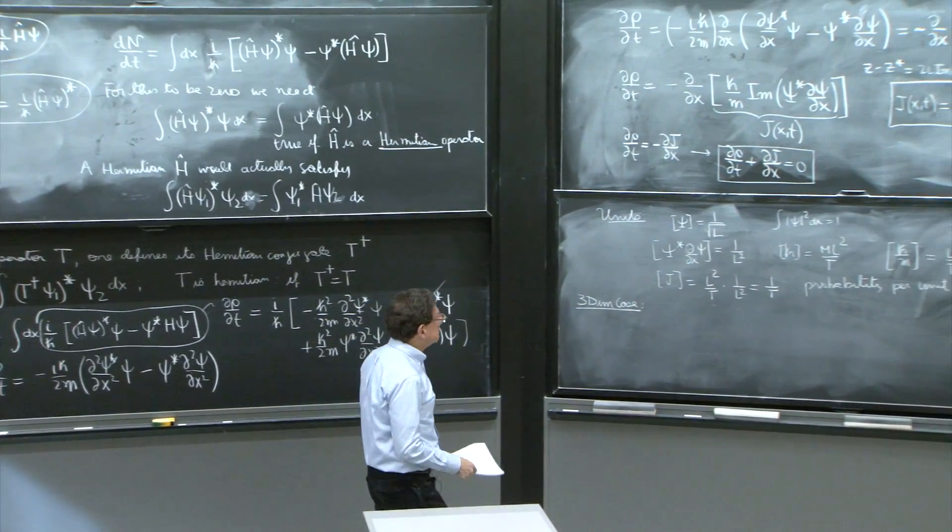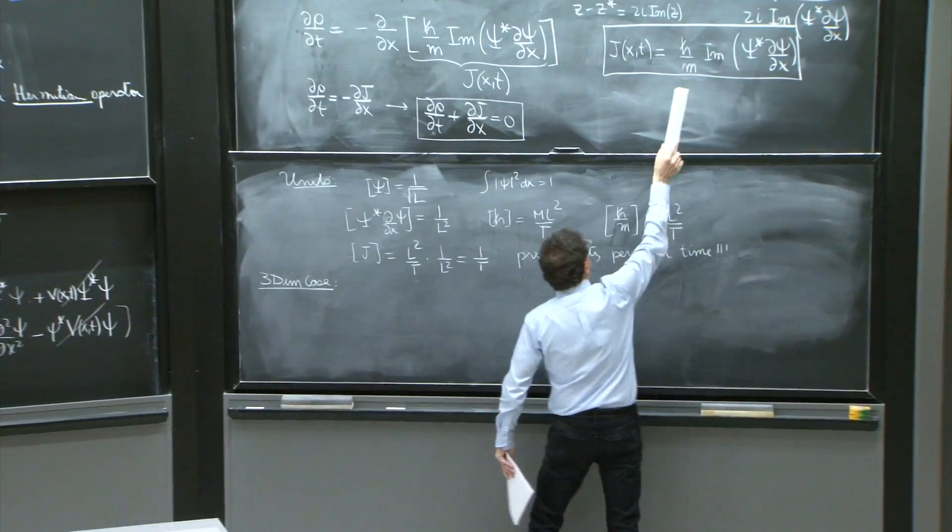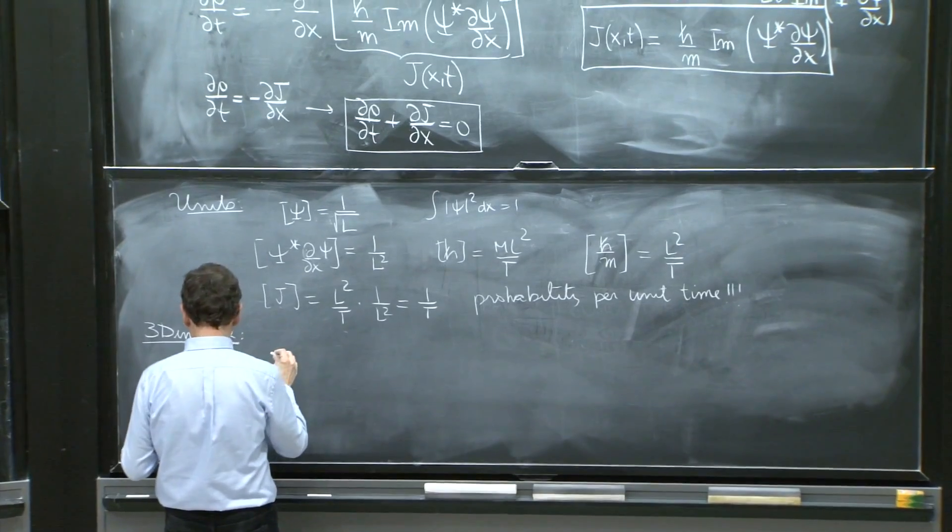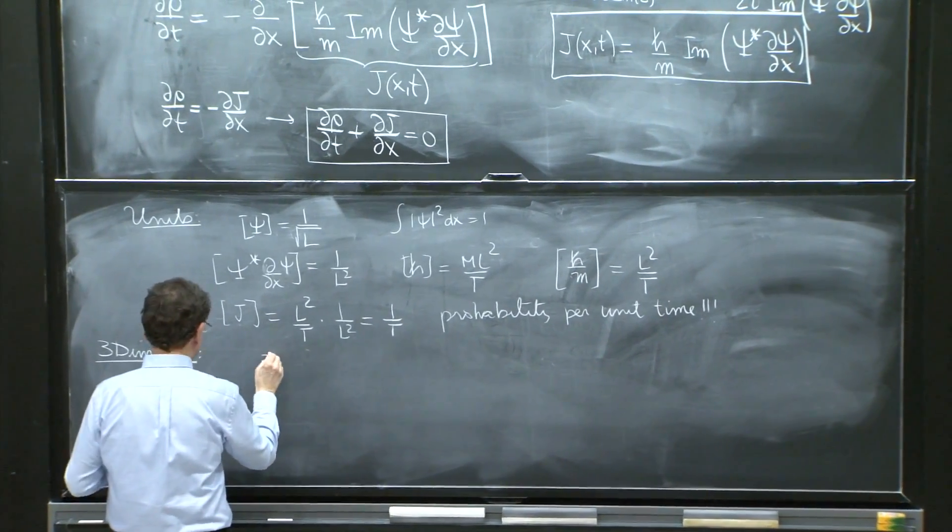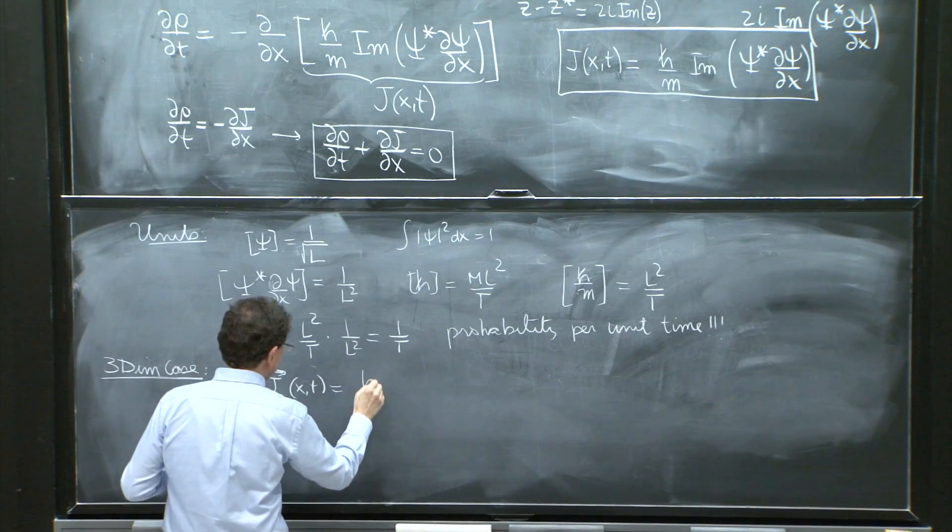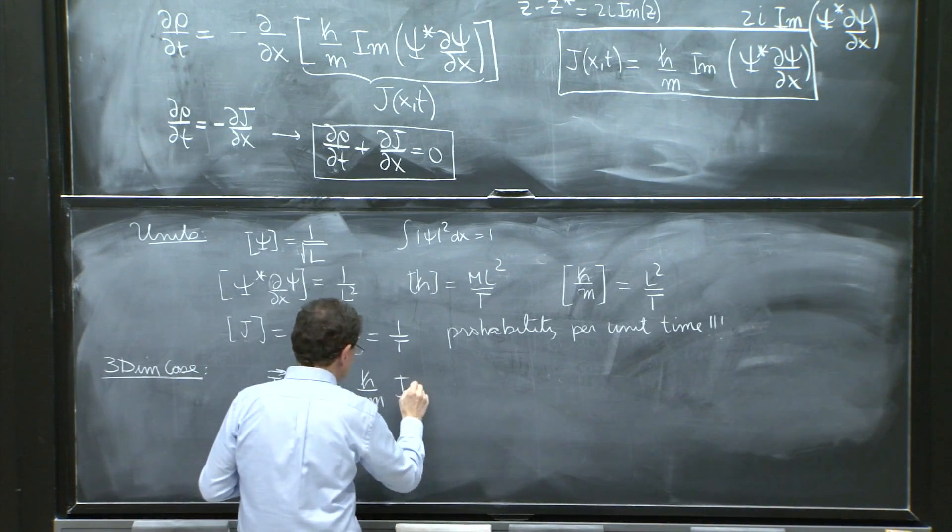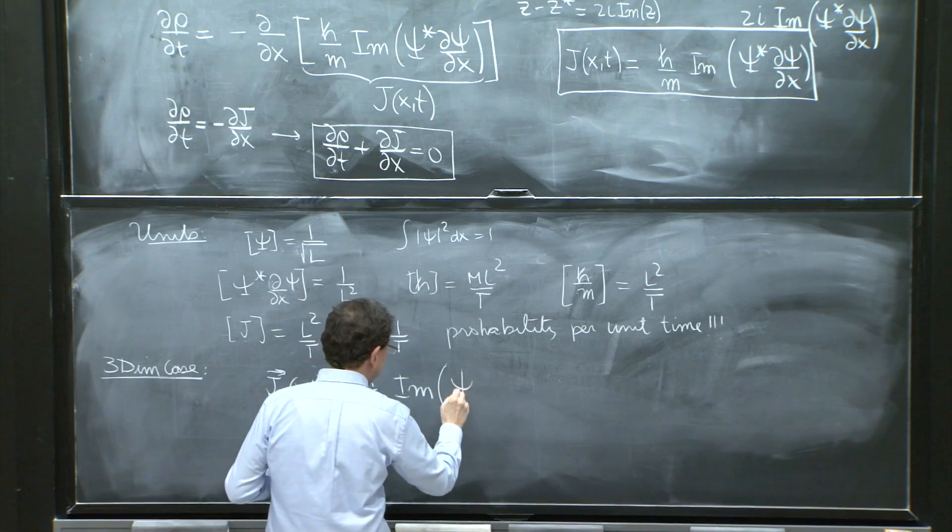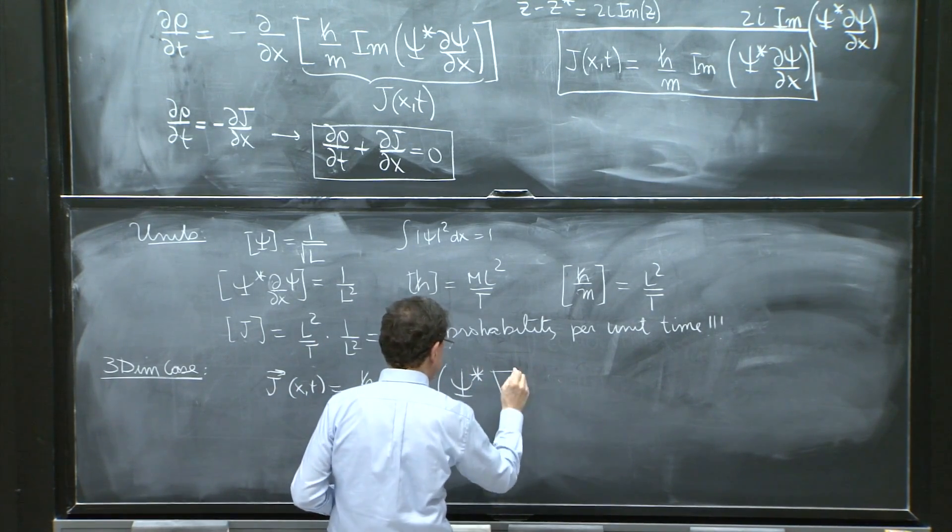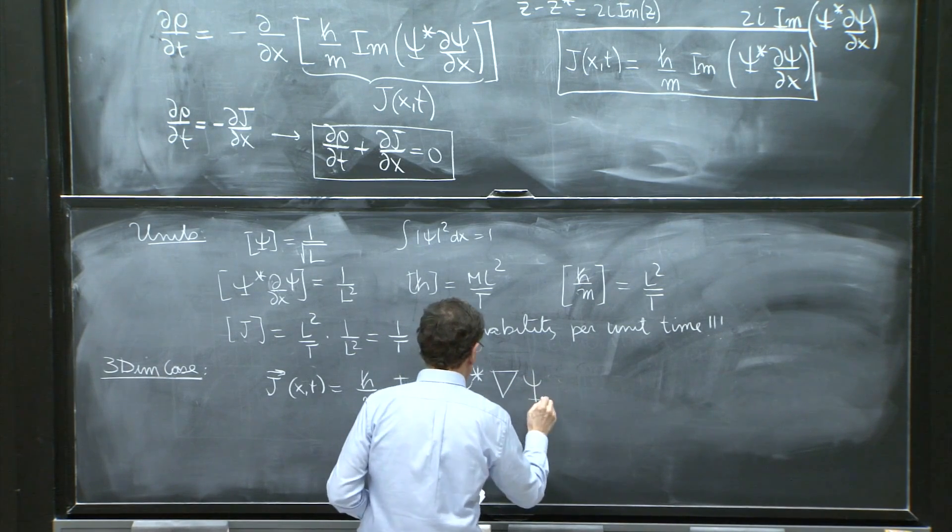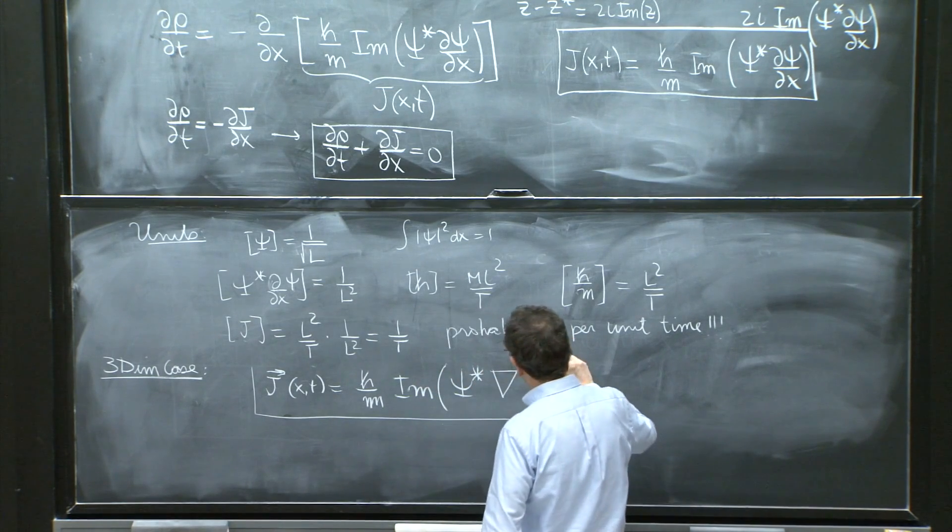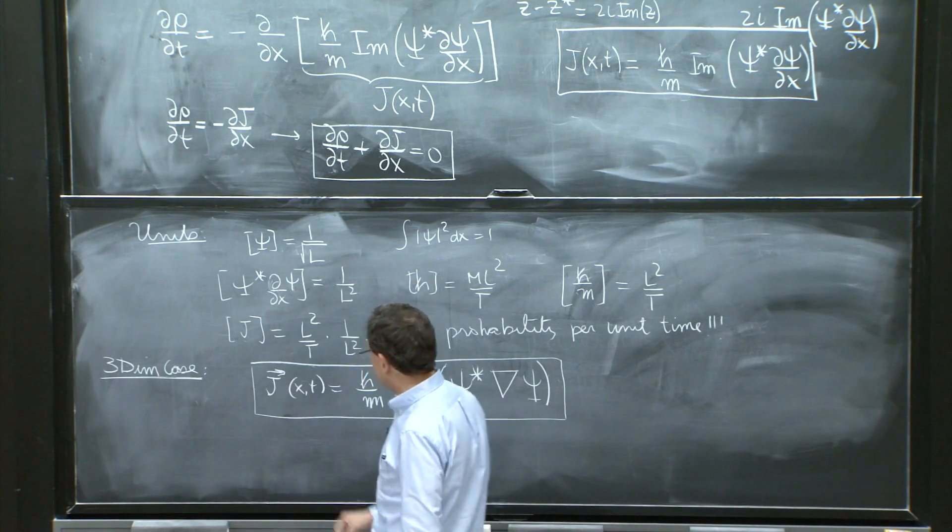And the current must be a very similar formula as this one. And indeed, I'll just write it here. The current is h bar over m, the imaginary part of psi star. And instead of d dx, you expect the gradient of psi. That is the current for the probability in three dimensions.